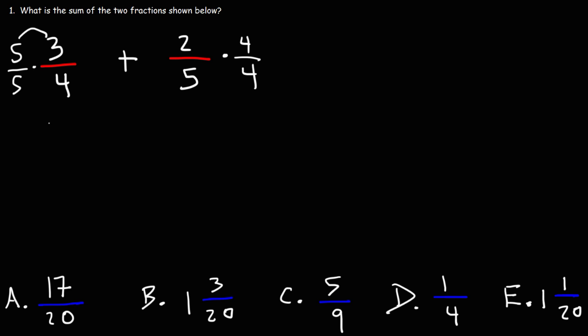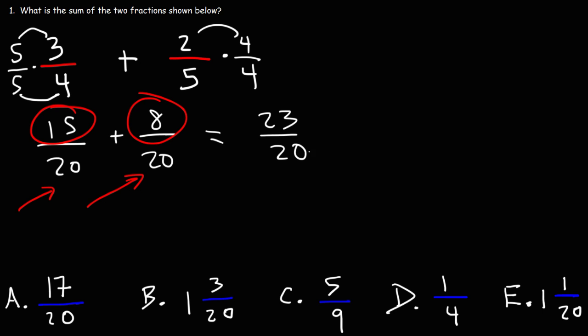5 times 3 is 15. 5 times 4 is 20. 2 times 4 is 8. And 4 times 5 is 20. So now that these two are the same, we can add the numerators of the two fractions. 15 plus 8 is 23. So the answer is 23 over 20.